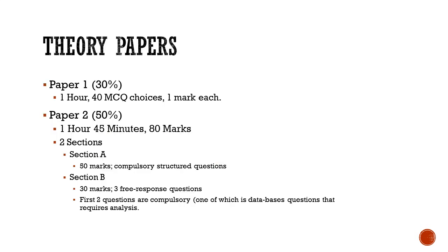Zooming in to the theory paper: Paper 1 consists of 40 MCQ, all of which has to be answered within 1 hour. Paper 2 consists of 2 sections, A and B. Section A comprises compulsory structured questions, all to be answered for 50 marks. And Section B consists of 3 free response questions for 30 marks.